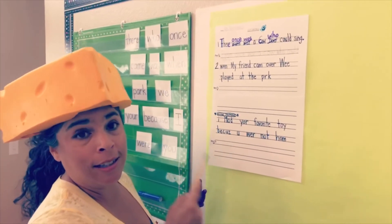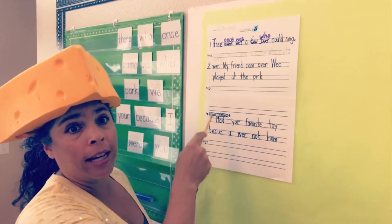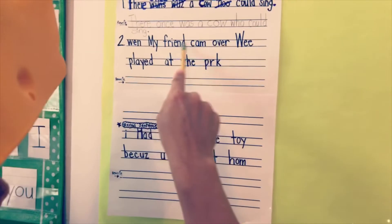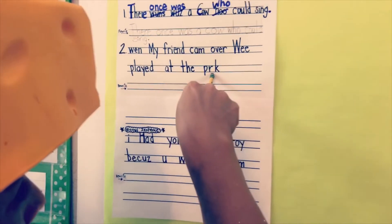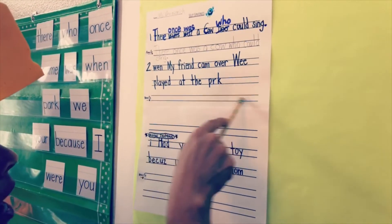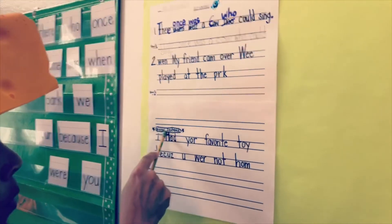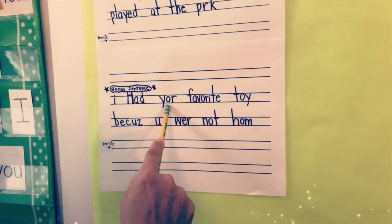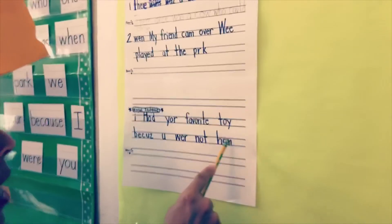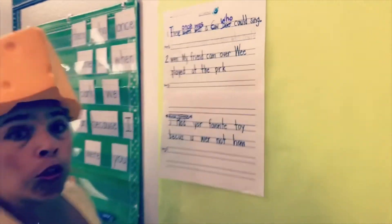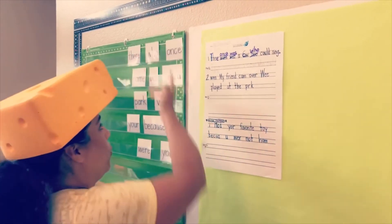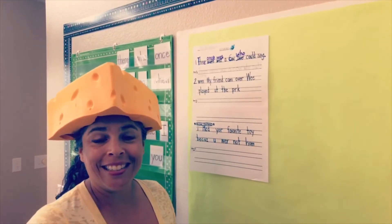Now I'm going to read you the silly sentences that you will be editing and correctly writing on the lines below. Number two says: 'When my friend came over we played at the park.' Edit that, make the changes, and rewrite it. There's an extra line on the second page if you need it. The bonus sentence says: 'I had your favorite toy because you were not home.' Don't forget — if you need to check your high-frequency word list, that's your word wall. Have fun with your silly sentences, bye!